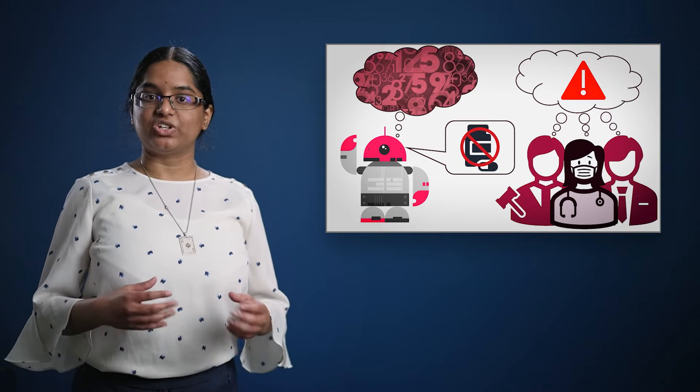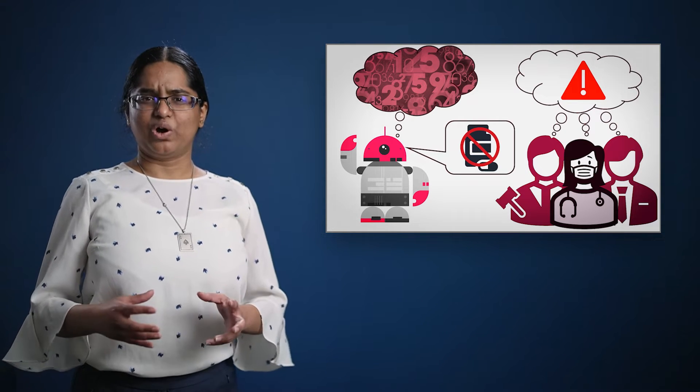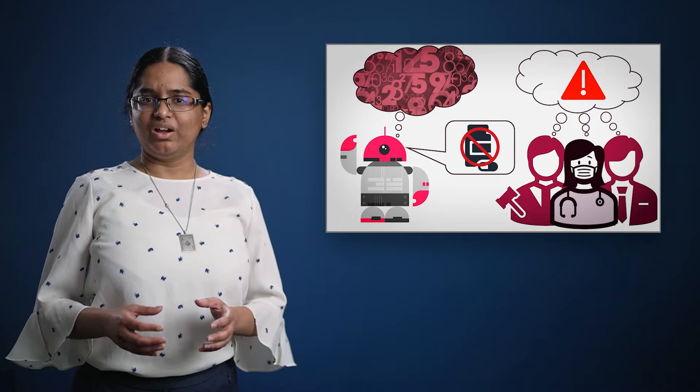The system says that because this patient has asthma, they're more likely to be low risk. Hang on, asthmatics are high risk. What's happening here?